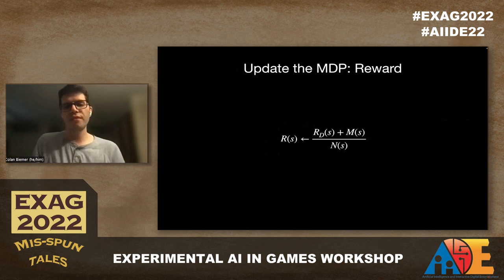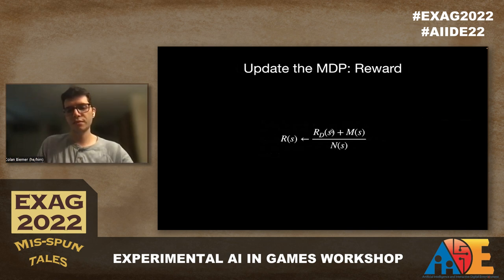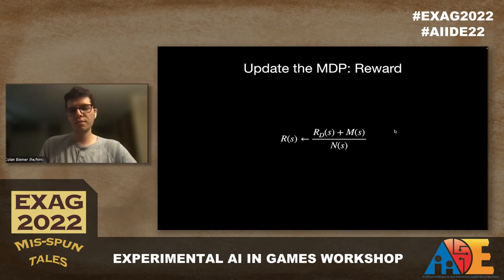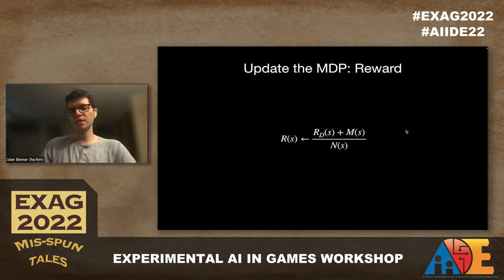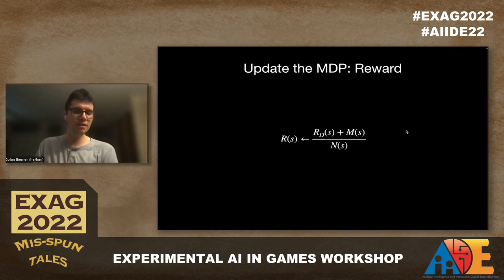For the rewards, we have an equation where the numerator has the designer reward table plus M of S — which could be a player model or the percent completed for a level segment. In our case, we use a surrogate player model. The denominator includes N of S, which is the number of times a state was seen by the player. So S of A and S of B would have been incremented in our example, but not S of C, because the player never made it there.